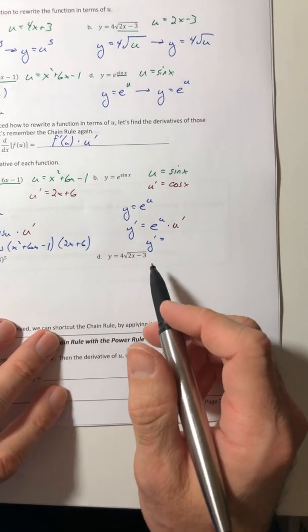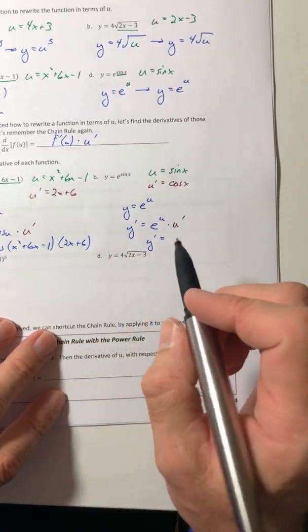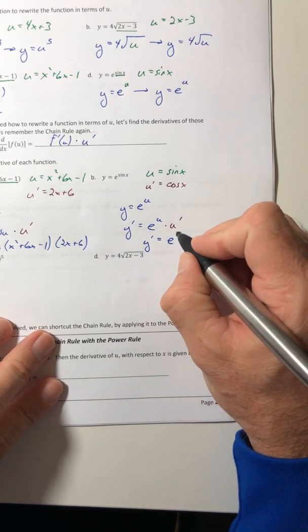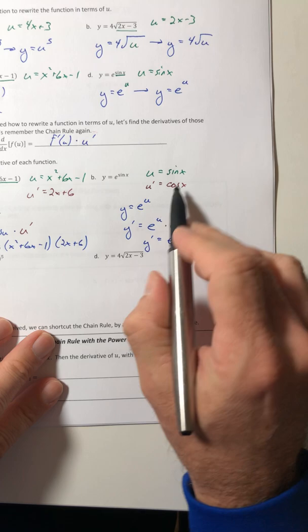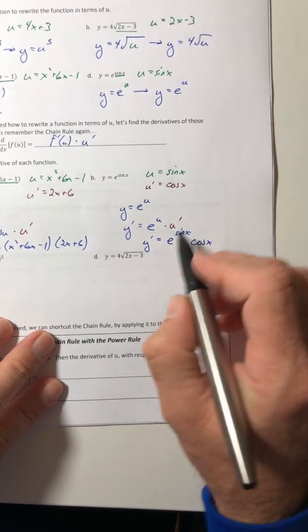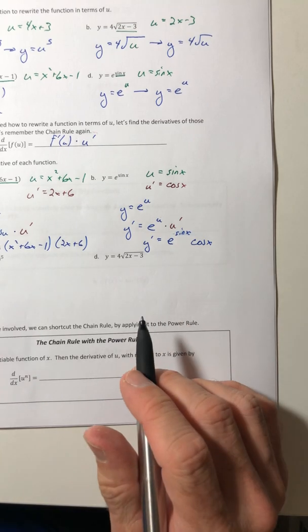So then just get everything back in terms of x or your original variable. So reverse your substitution with the u and then just plug in the u prime. So e to the sine of x times cosine of x.